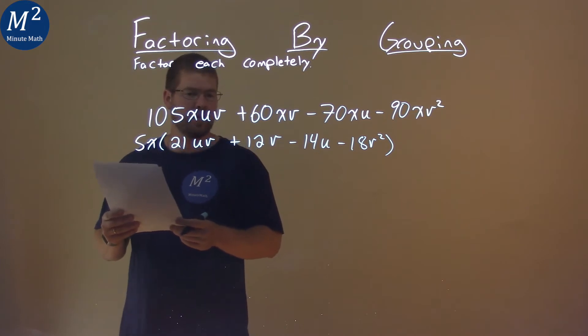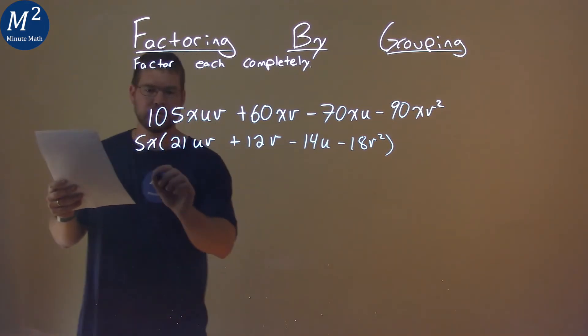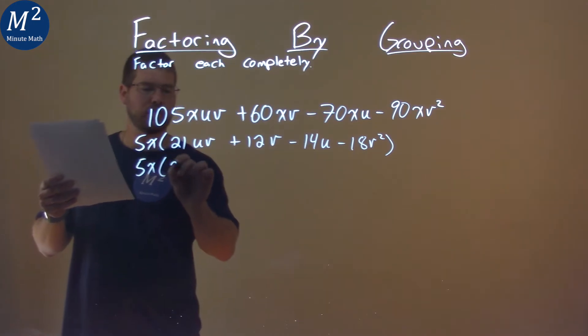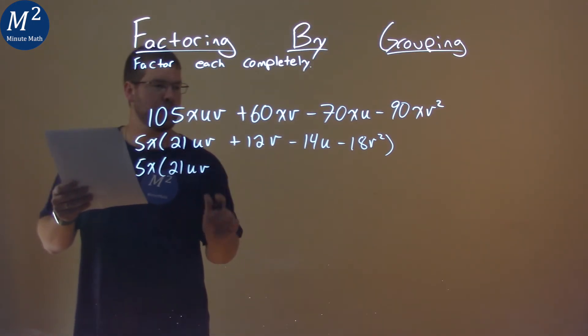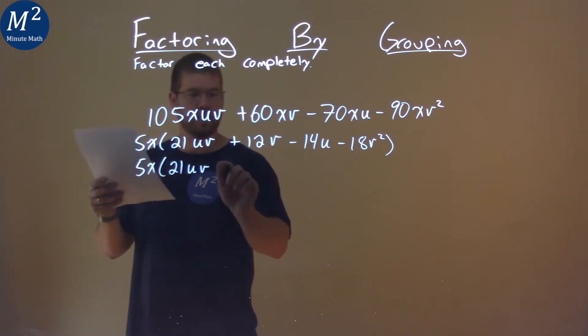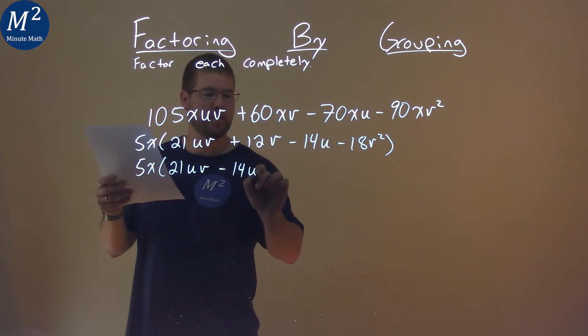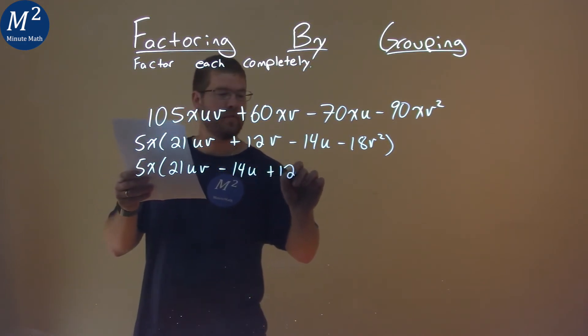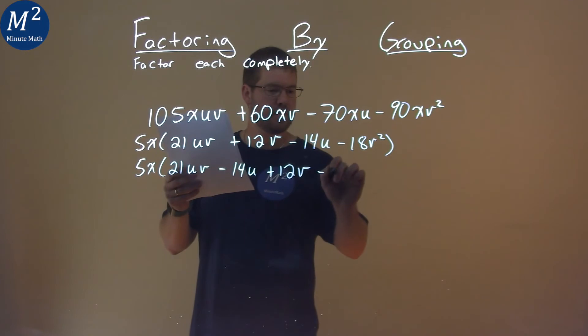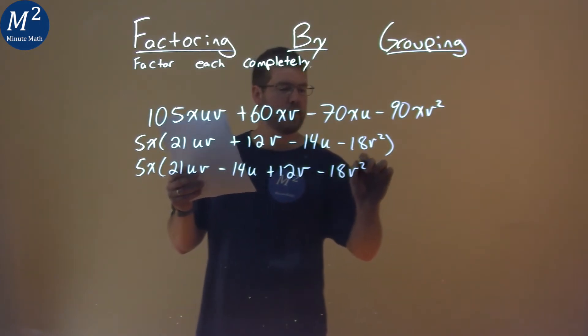Now, from here though, I want to put some common terms next to each other. Let's rearrange this. 5X comes down, 21UV here, and I'm actually going to put the 14U here, minus 14U, then plus the 12V minus the 18V squared.